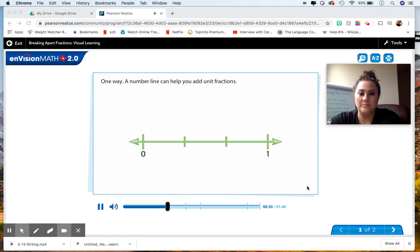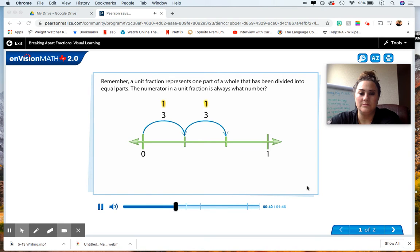One way. A number line can help you add unit fractions. Remember, a unit fraction represents one part of a whole that has been divided into equal parts. The numerator in a unit fraction is always what number?